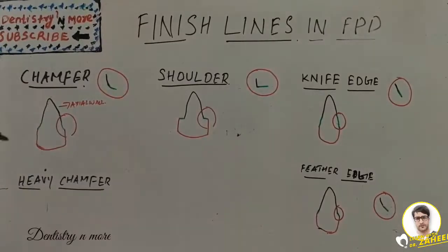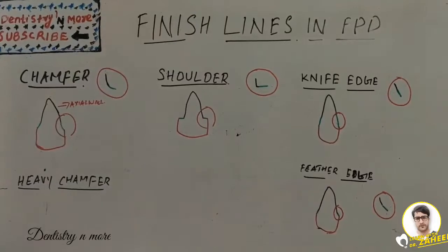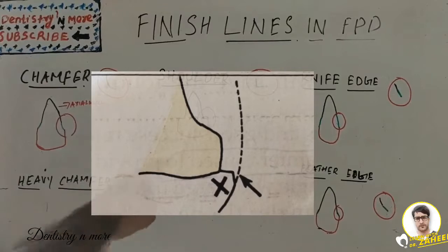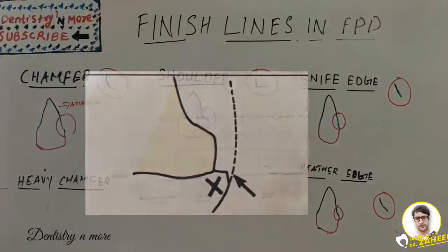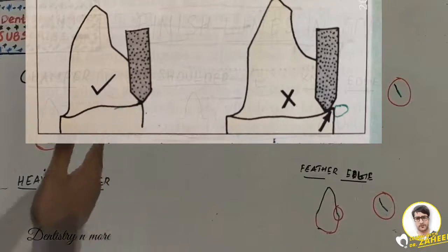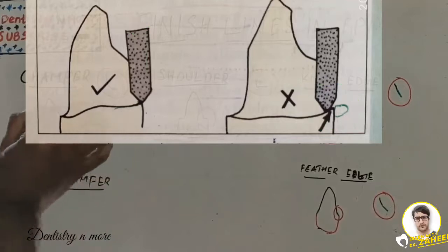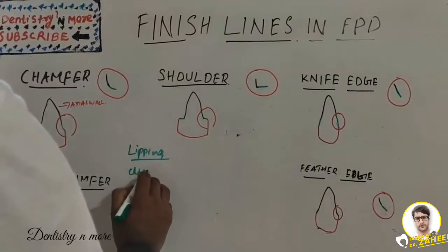Shallow bevels should be avoided because the restoration will be too thin at that area and may chip easily. The discrepancy decreases with increasing angulation of the bur. The bevel should not produce a very acute margin, which can lead to fracture of the wax pattern during removal. Also, the tooth should not be reduced more than half the width of the diamond bur, as over-reduction may lead to a lip of unsupported enamel, known as lipping.